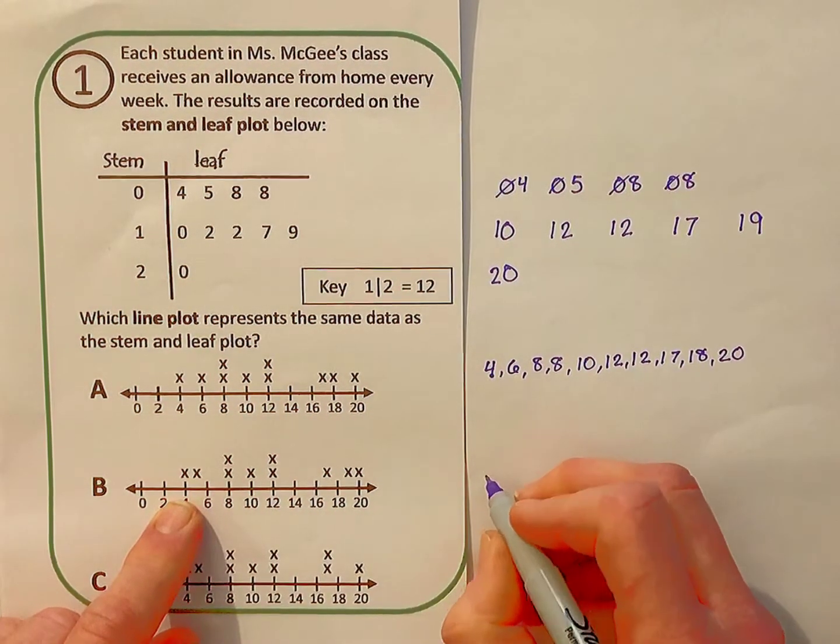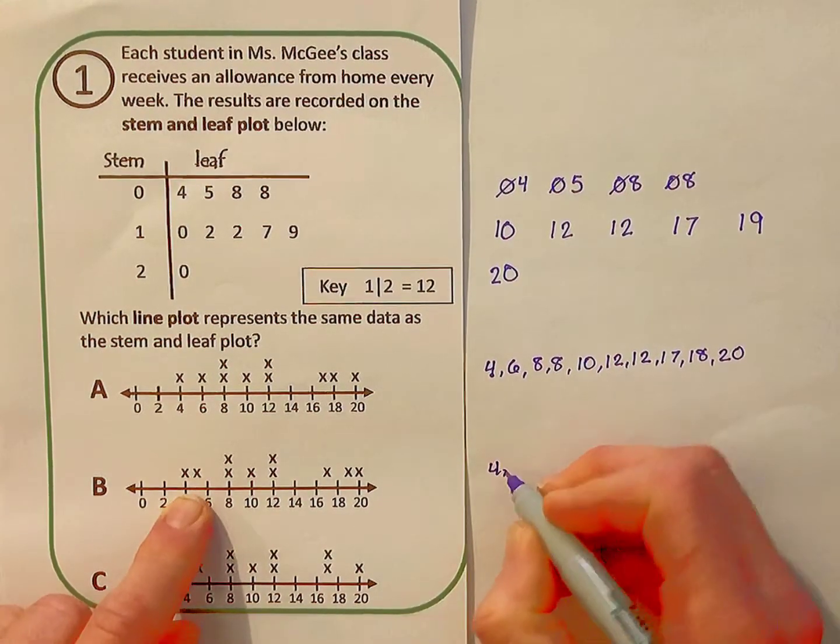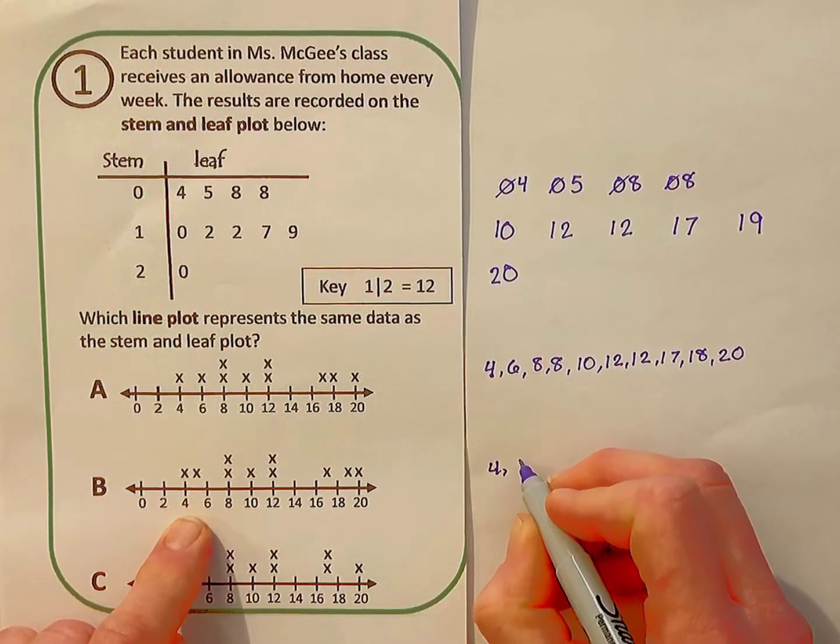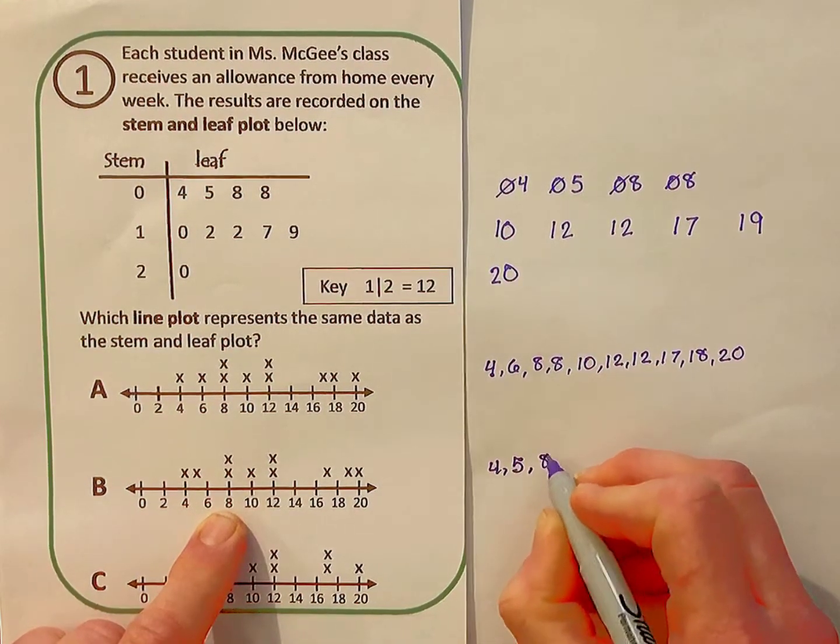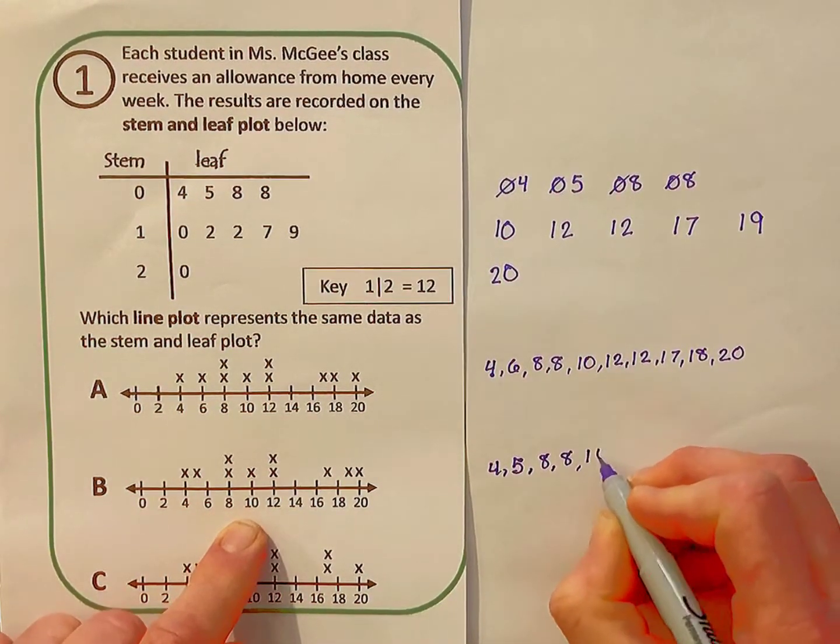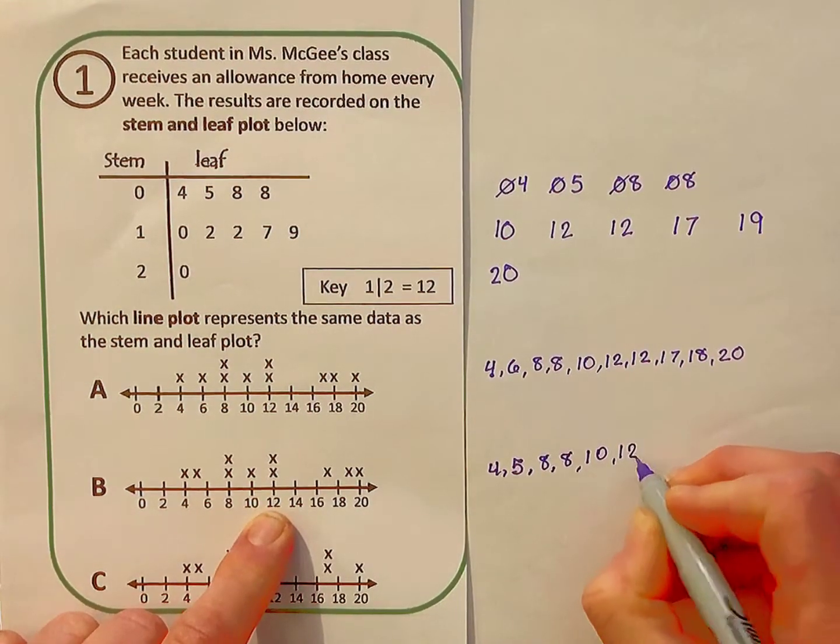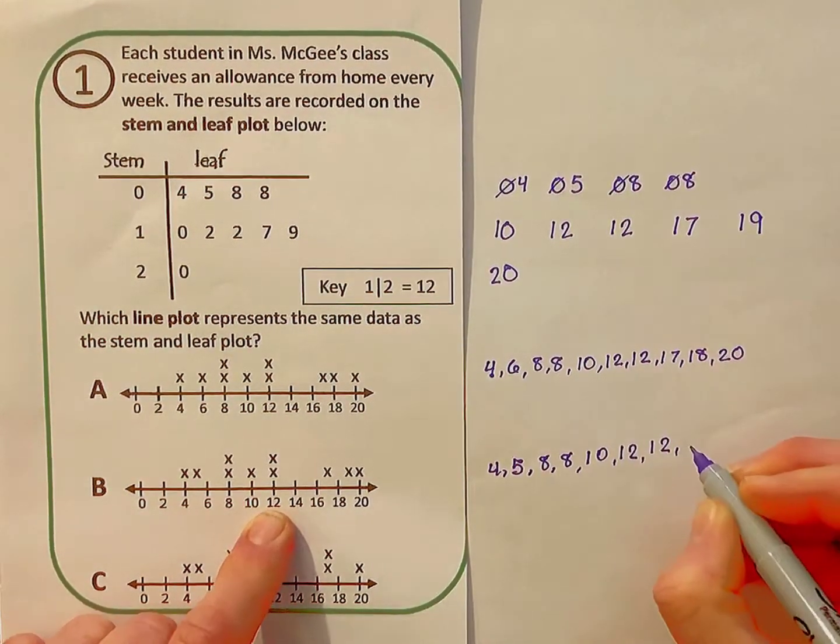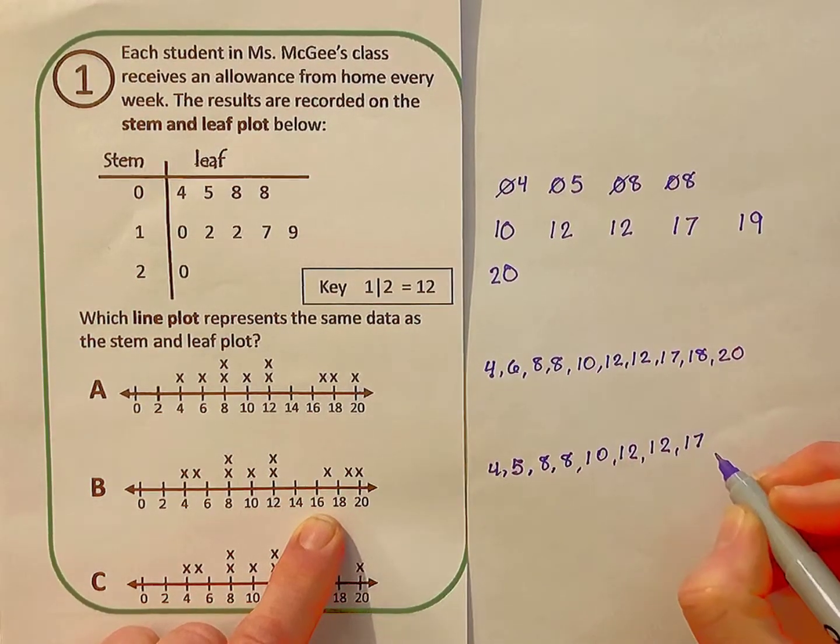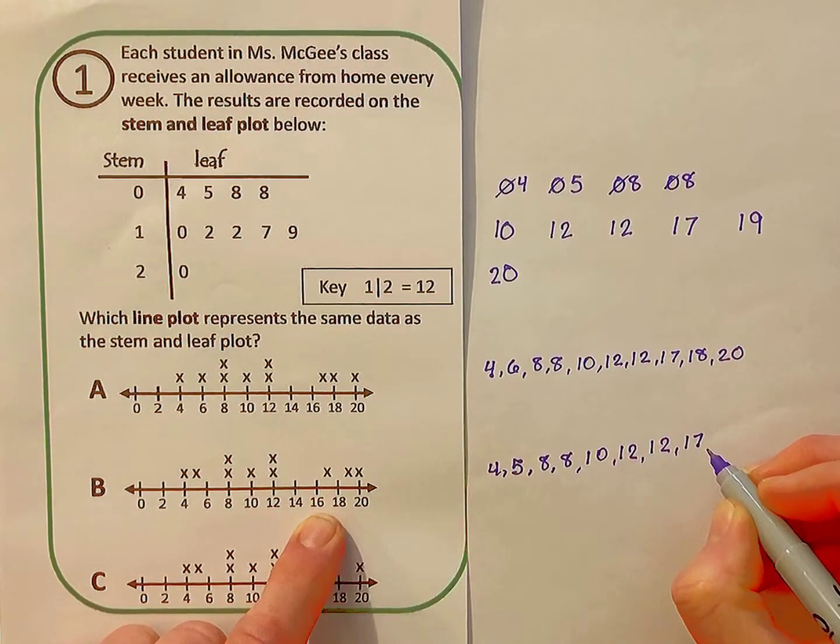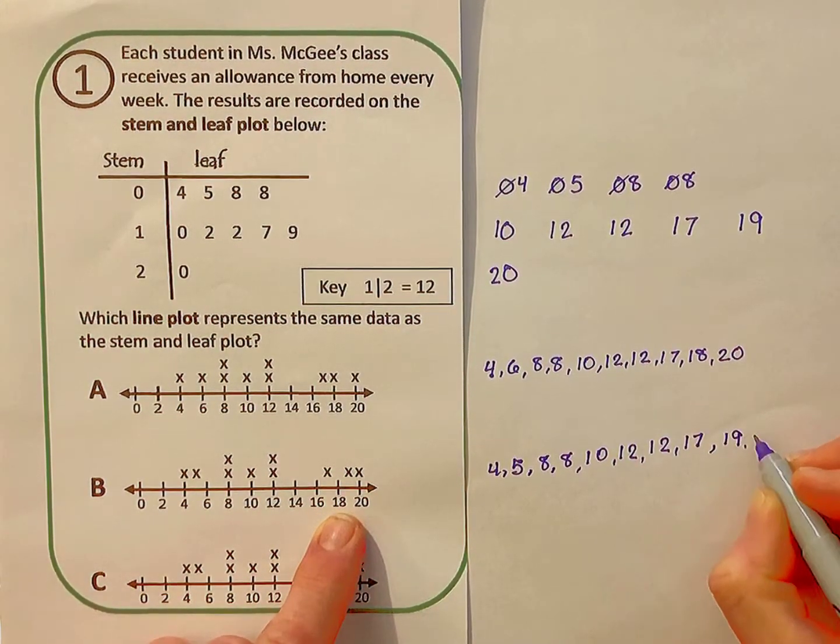We've got a 4, and the X between the 4 and 6 represents 5. Then we've got two 8s, 10, two 12s, and we have another 17. It's the X between the 16 and the 18. Then we have a 19 between the 18 and the 20, and we have a 20.